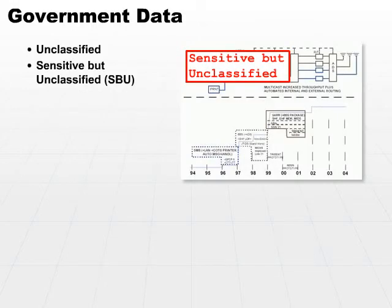Then there's Sensitive But Unclassified, or SBU information. Sensitive but unclassified information has some controls built into it — you're required to have a need to know to access this information, but it's not classified to the degree that requires a specific security clearance.